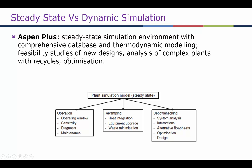It's typically used for operation — looking at the operating window of a chemical plant, sensitivity analysis, or diagnosing certain problems or doing maintenance. Before doing actual maintenance of an operational vessel, we can run the simulation in Aspen Plus and then use those results in the actual plant.